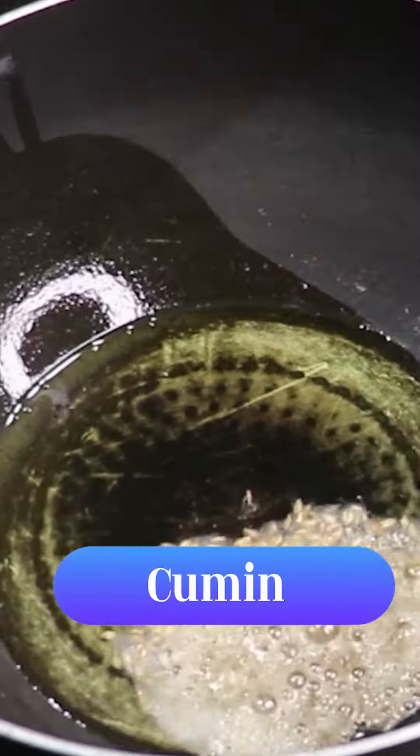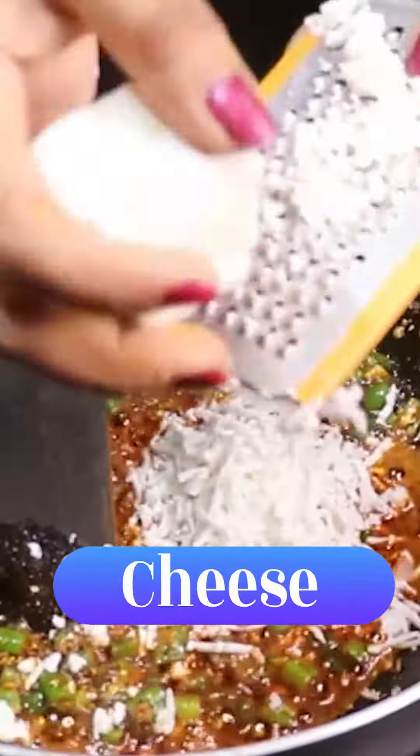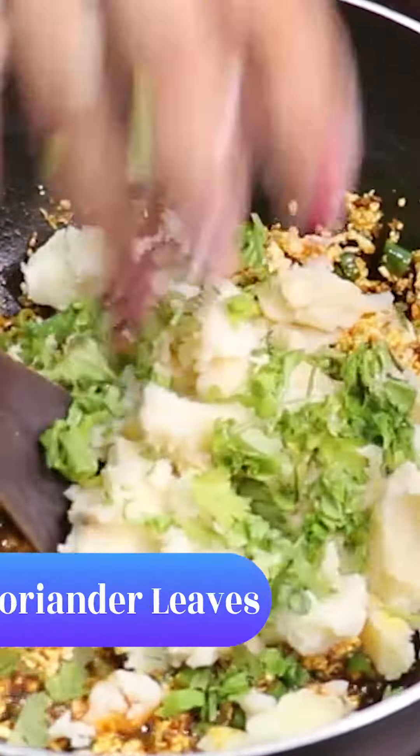We'll add a little oil, jeera, mustard seed, a little hing, and we'll add haldi powder, lal mirch powder, and beans.